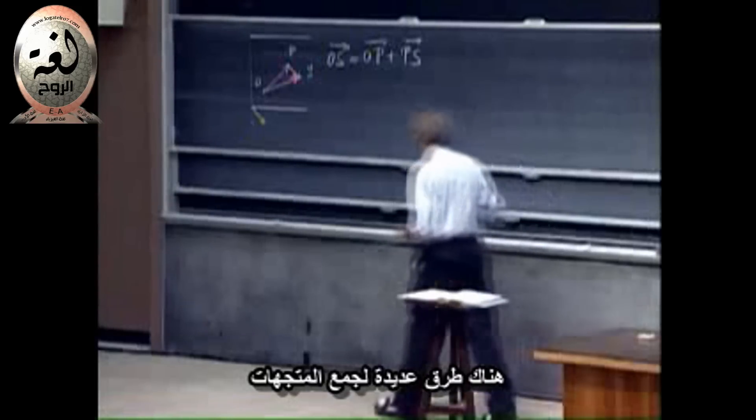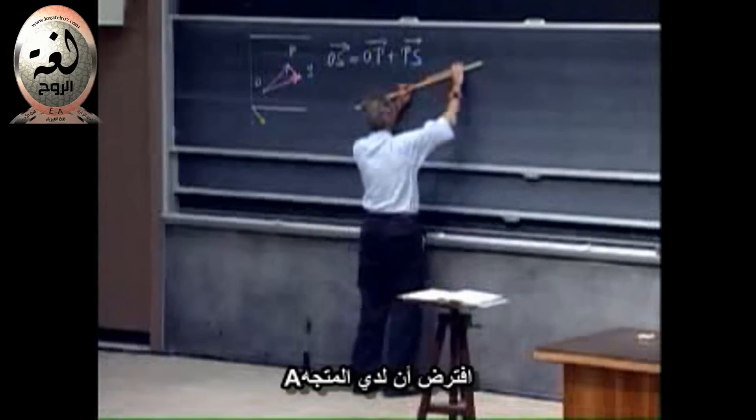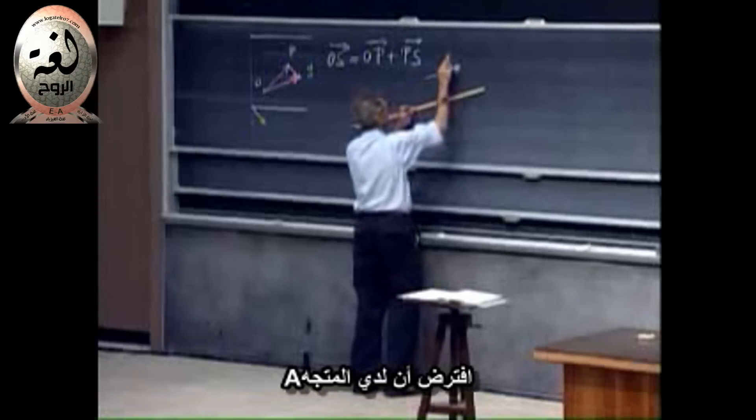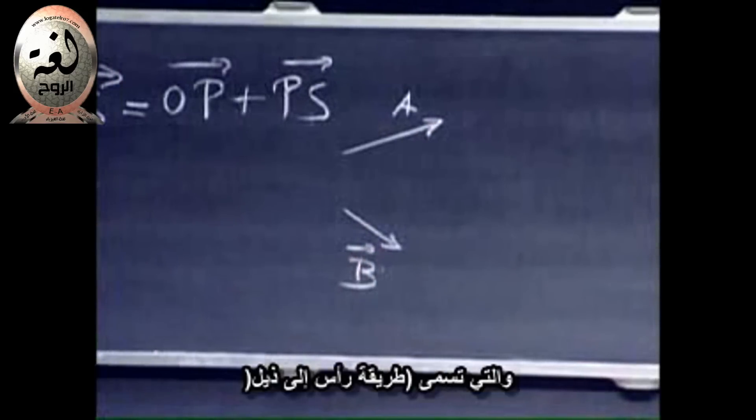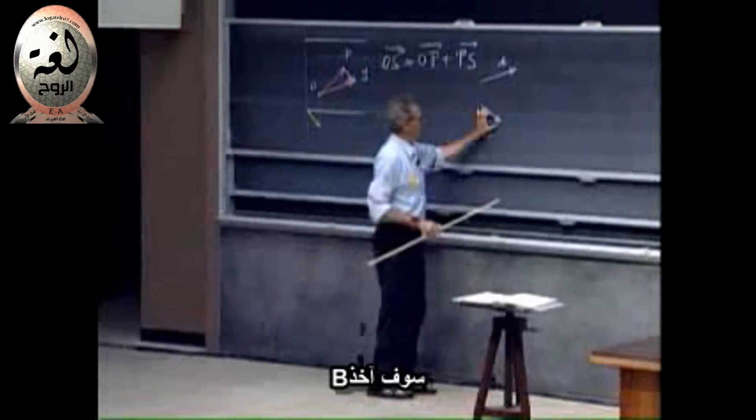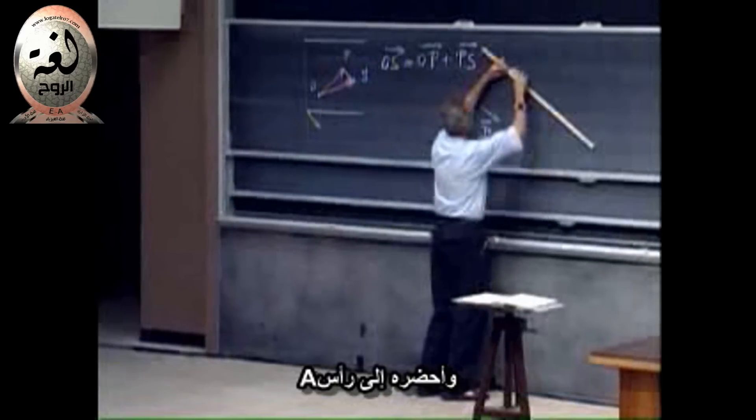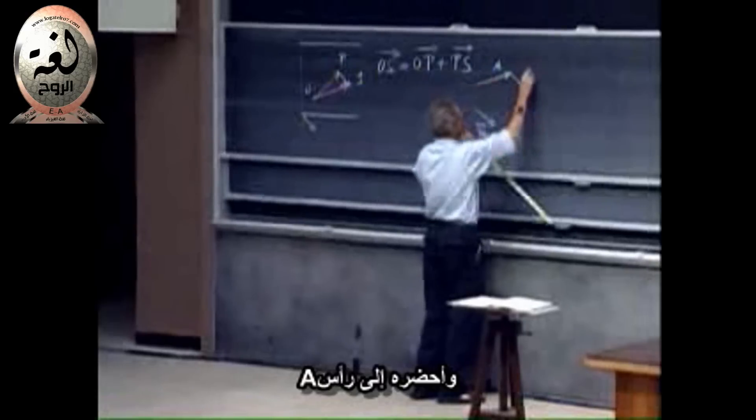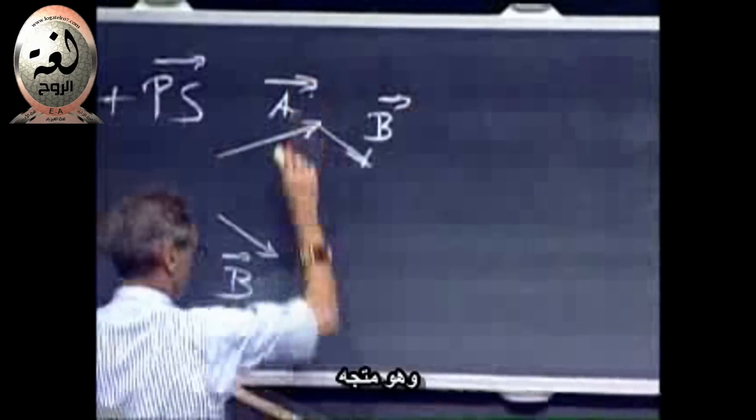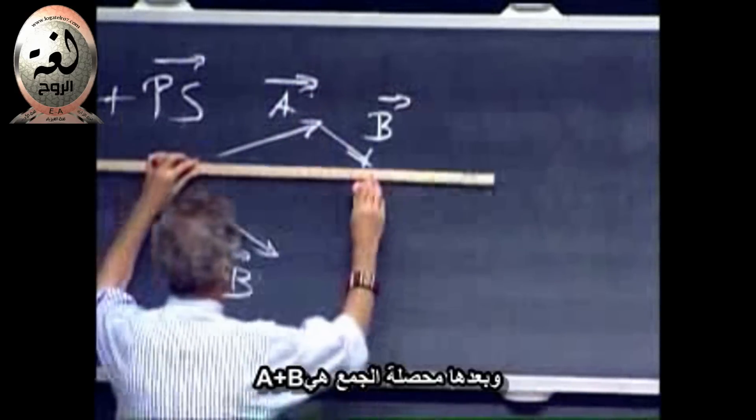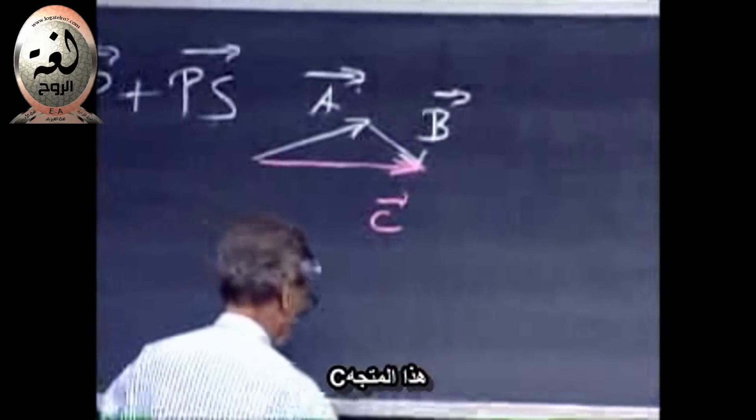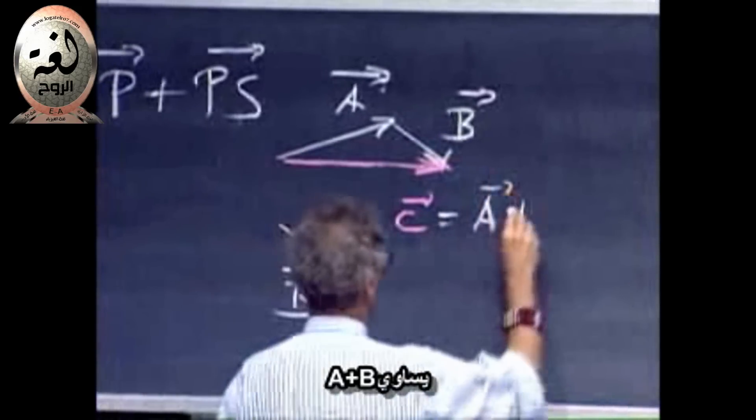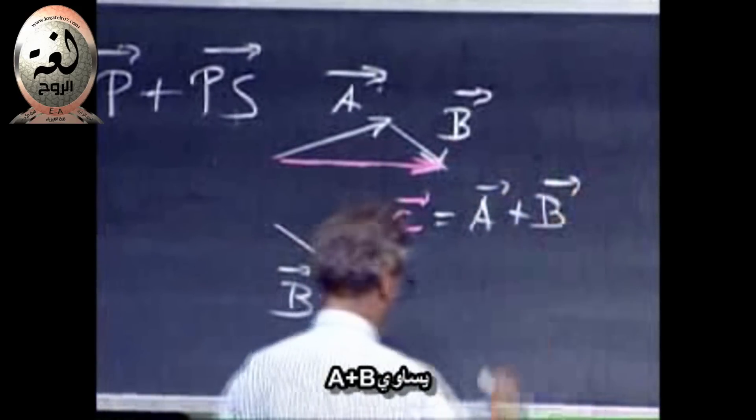There are various ways that you can add vectors. Suppose I have here a vector A and I have here a vector B. Then you can do it this way, which I call the head-tail technique. I take B and I bring it to the head of A. So this is B. This is a vector. And then the net result is A plus B. This vector C equals A plus B.